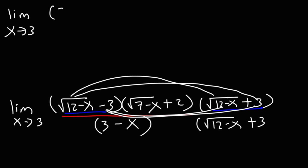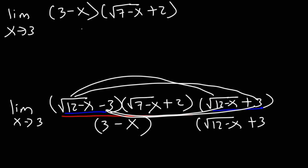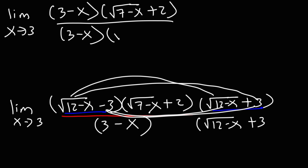So we're going to have 3 minus x on top, and we still have the square root of 7 minus x, plus 2. On the bottom, we have 3 minus x, and the square root of 12 minus x, plus 3.